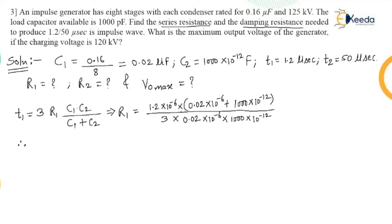So therefore the value of resistance R1 which comes out to be 420 ohms. Feed this value in the calculator. You will get the answer, R1 is this one.